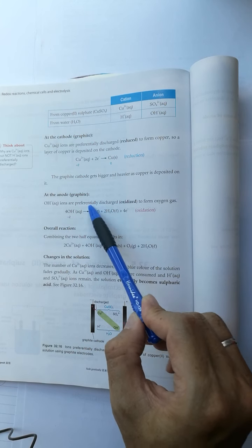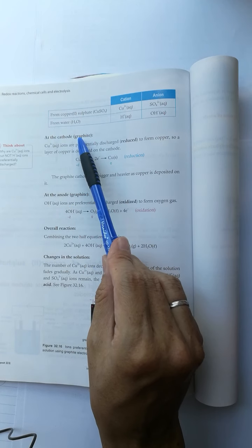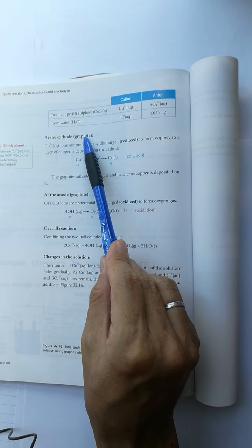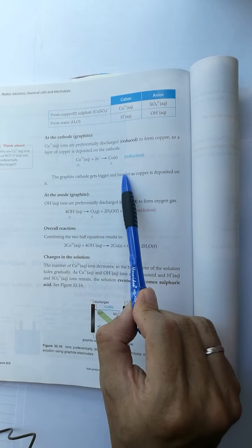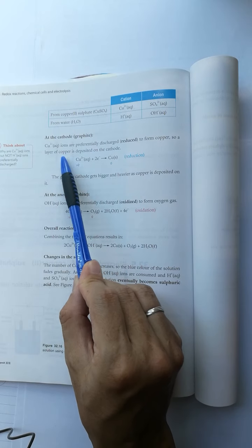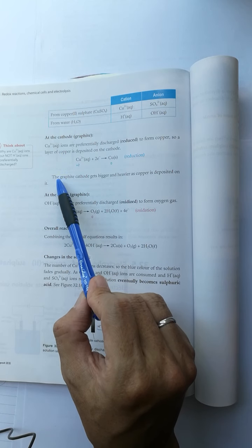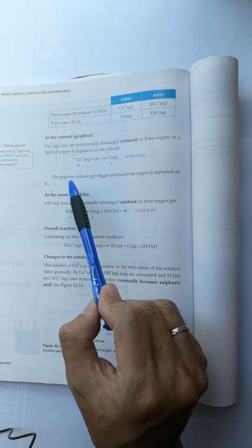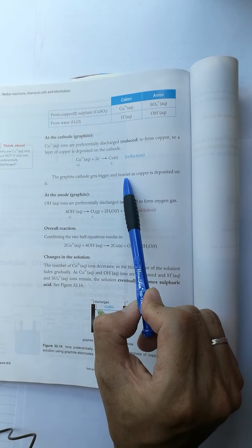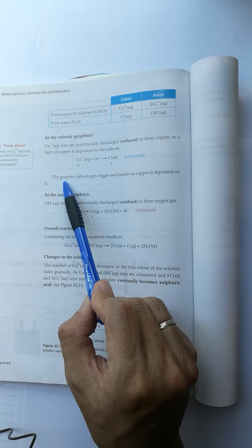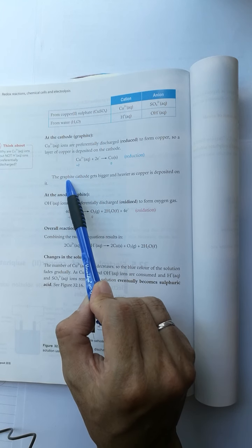The black graphite cathode changed to reddish brown copper. The color changes from black to brown, and the graphite becomes heavier as the size increases.